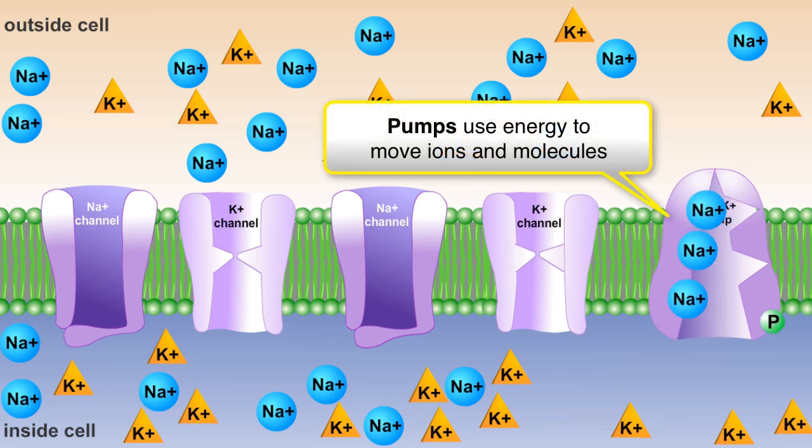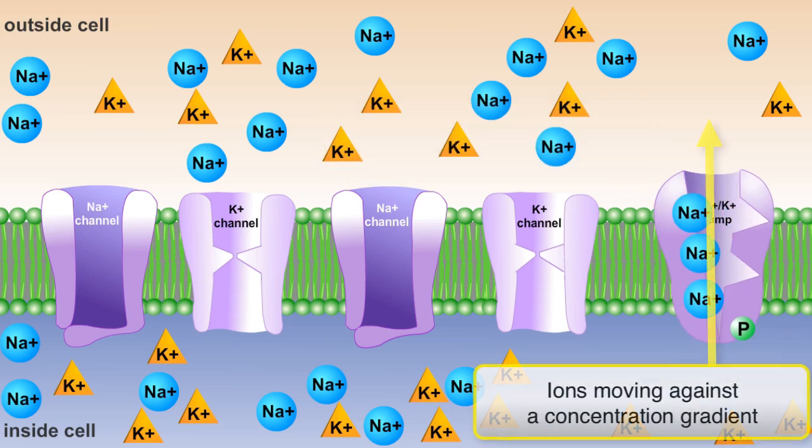The proteins that conduct this form of transfer are often called pumps because they use energy to force molecules or ions to move from an area of lower concentration to an area of higher concentration. This is commonly referred to as up or against the concentration gradient.